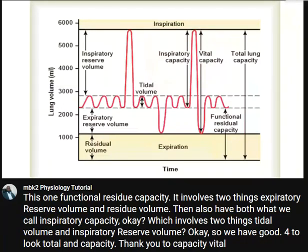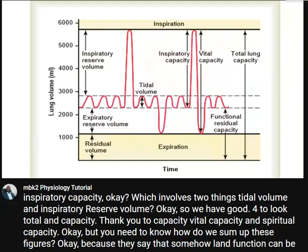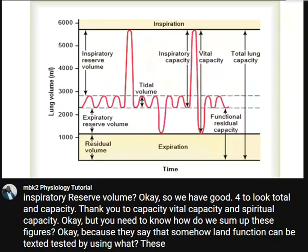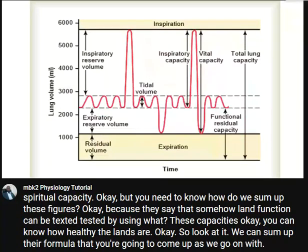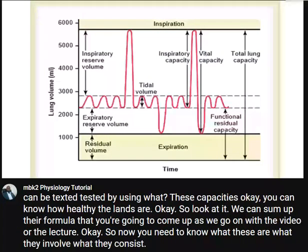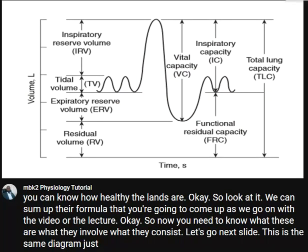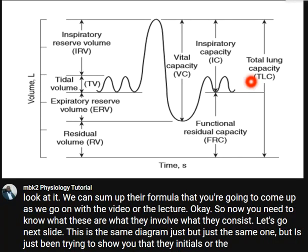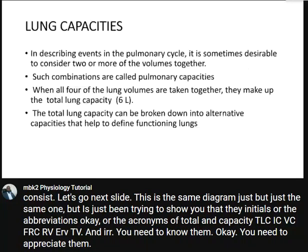You need to know how to sum up these figures, because lung function can be tested using these capacities — you can determine how healthy the lungs are. The abbreviations to know are: TLC (total lung capacity), IC (inspiratory capacity), VC (vital capacity), FRC (functional residual capacity), RV (residual volume), ERV (expiratory reserve volume), TV (tidal volume), and IRV (inspiratory reserve volume).